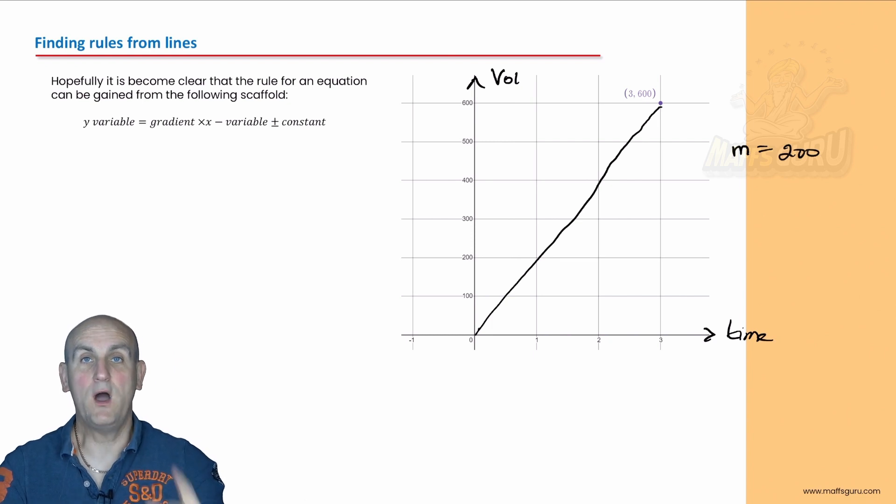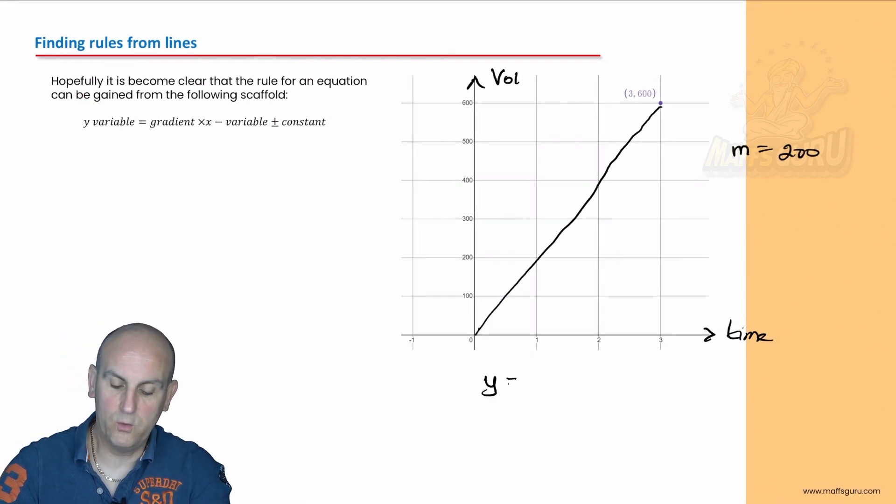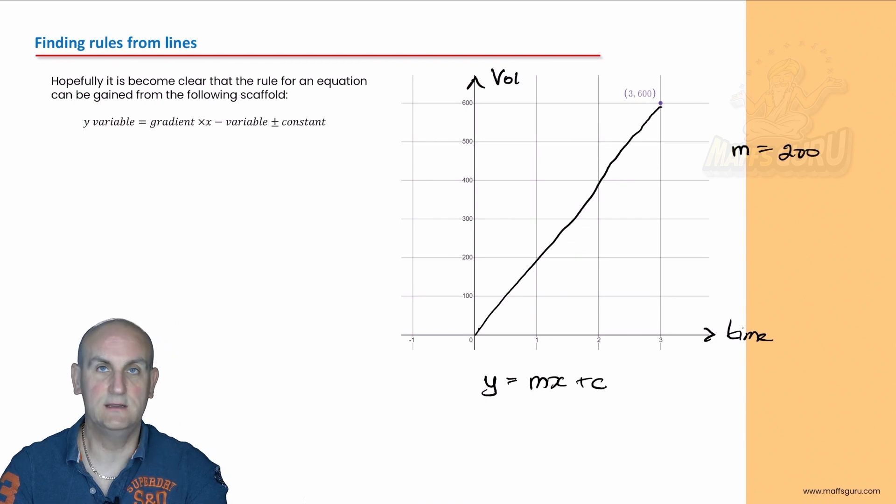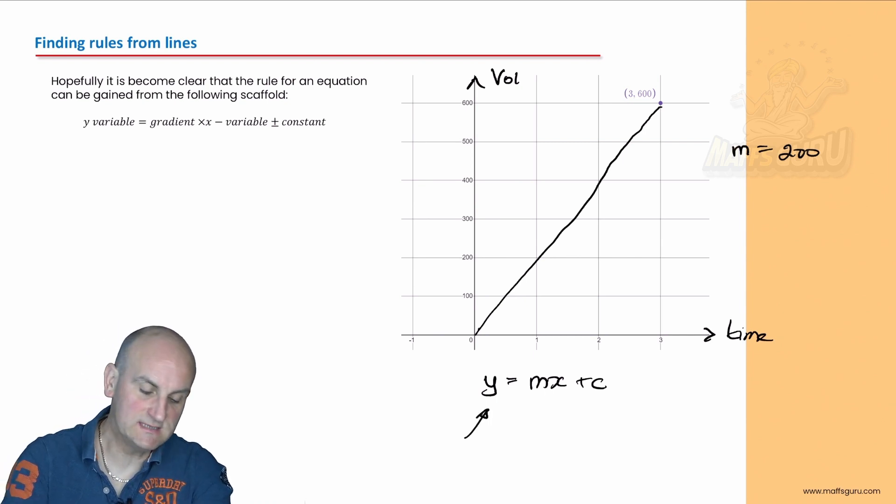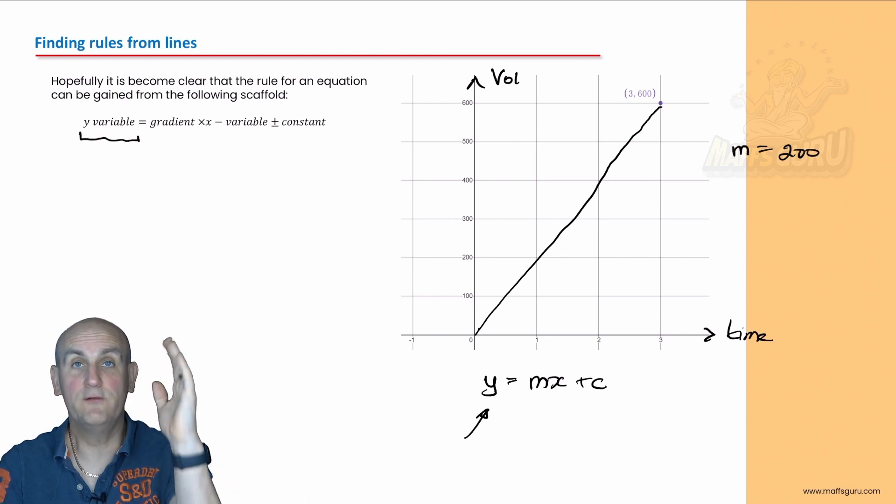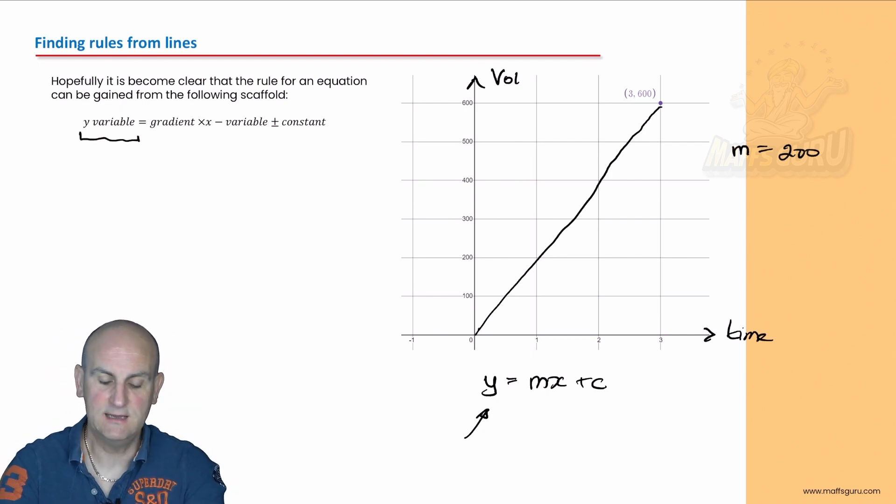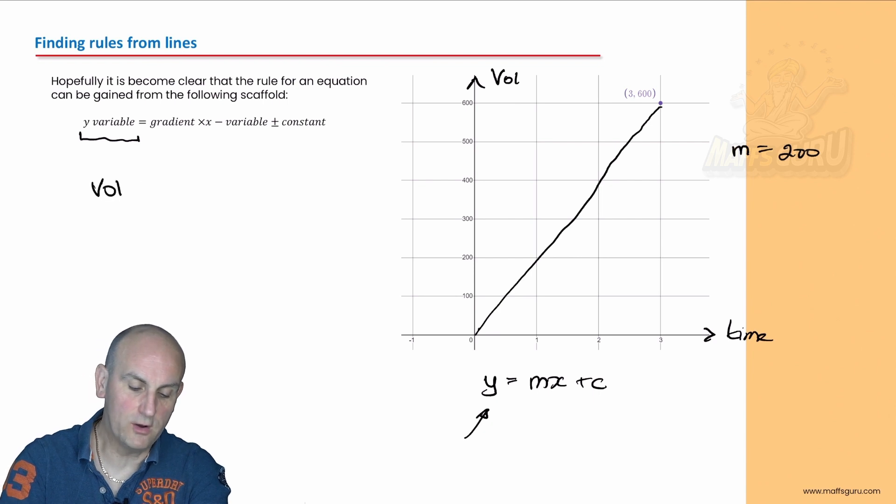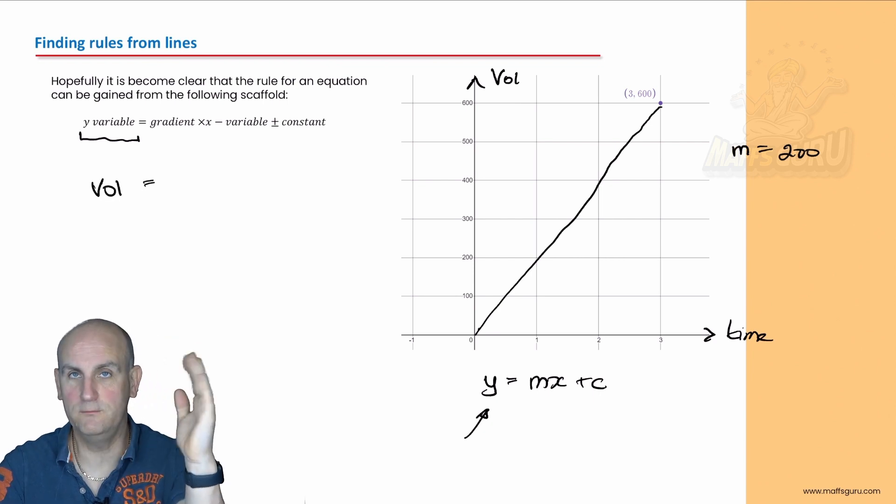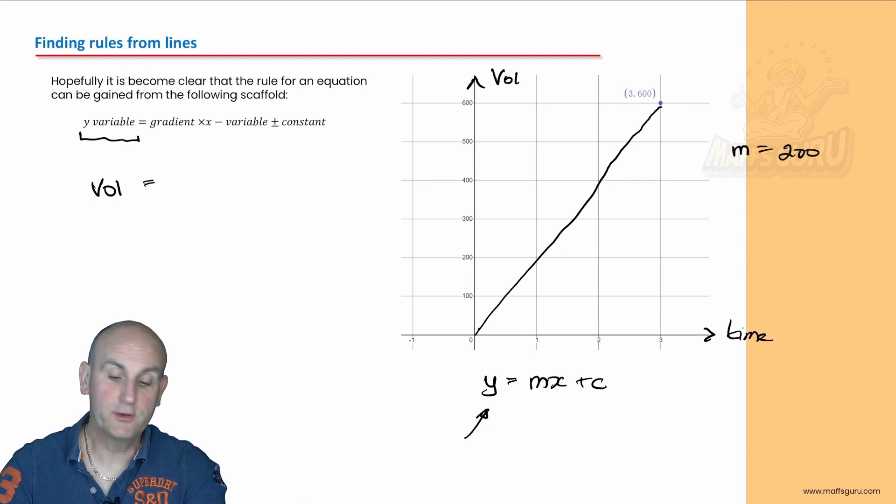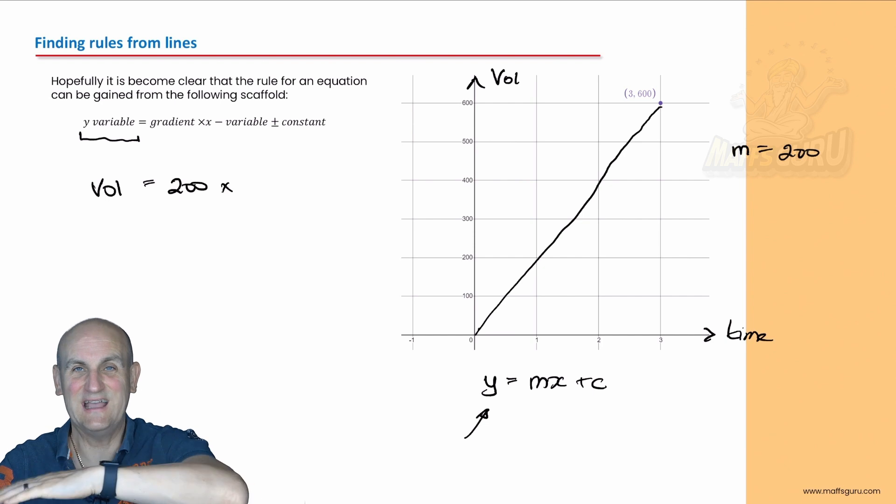Now, what do we say here? This is my volume. And we had time. And we knew that my gradient here worked out to be 200. Now, in a previous video, I'm fairly sure I would have mentioned y equals mx plus c. What is that? That is the equation of any straight line. Now, the y stands for whatever is on my y axis. Well, that's what I say here. My y variable is the wording I've written on my y axis. And that is going to be, for this question, vol, because that's what I've written.